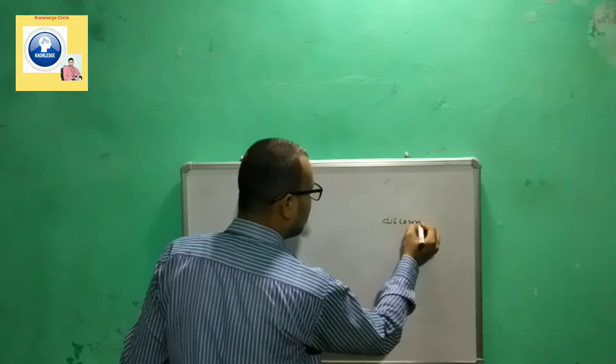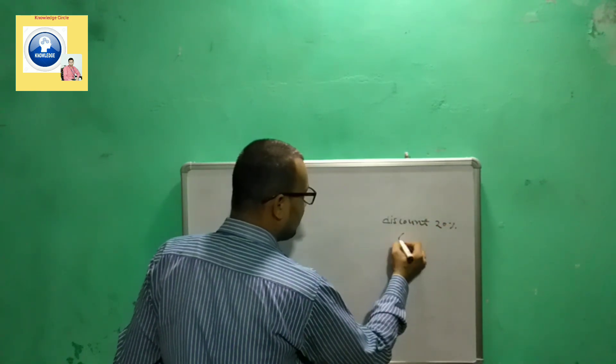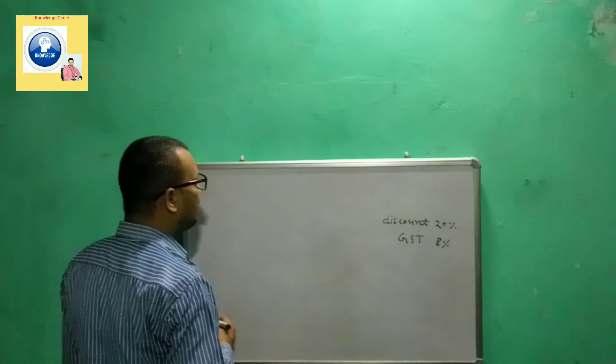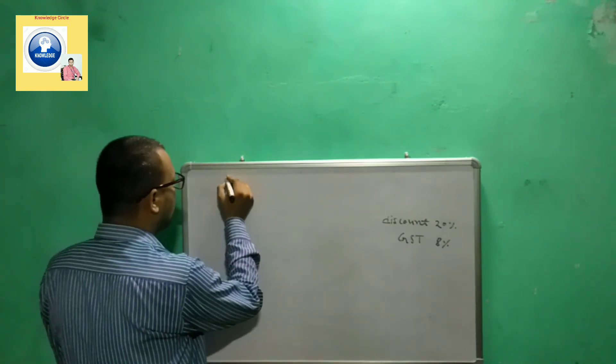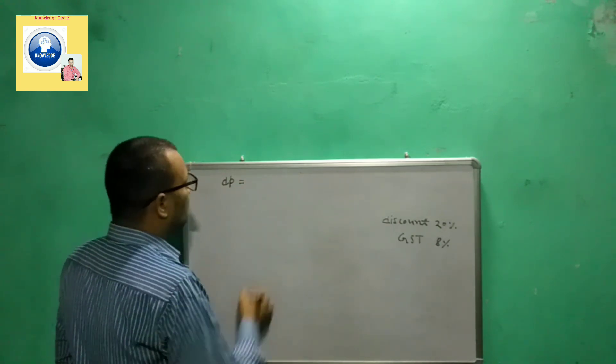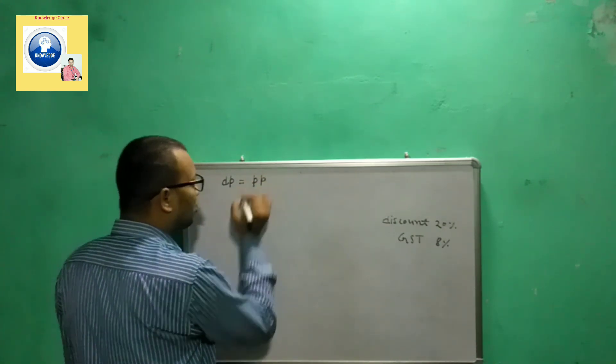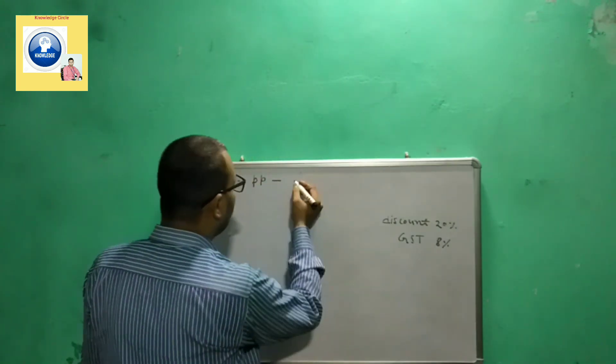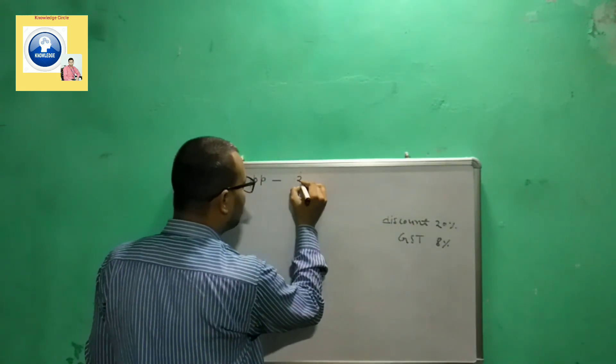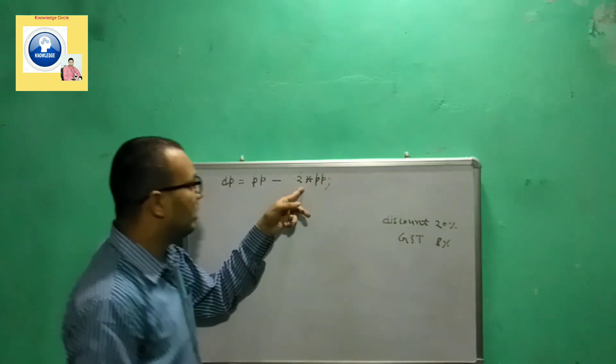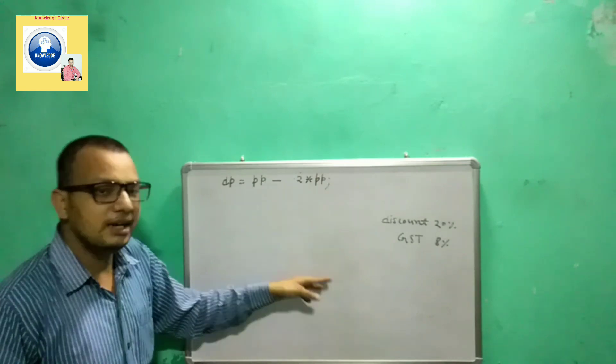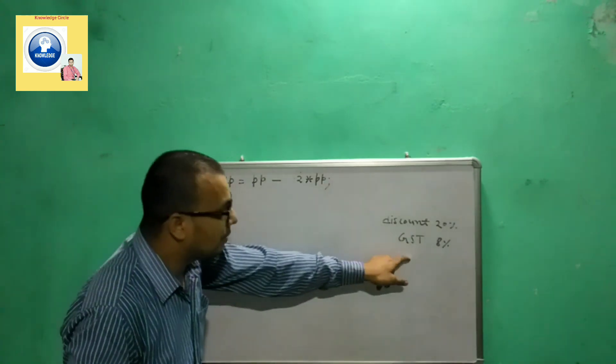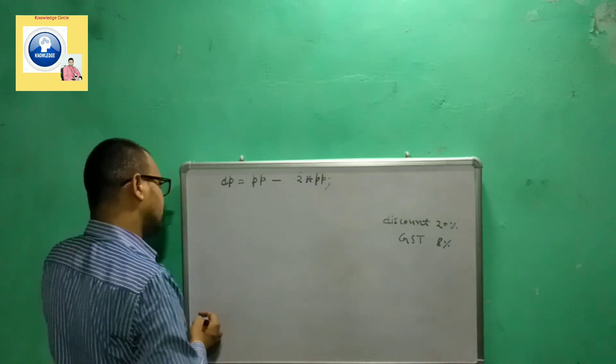Let's calculate the discount price: DP equals PP minus 0.2 into PP. 20 percent of PP will be subtracted from PP and that will be discount price. After deduction we will get the discount price. Now we have to apply 8 percent GST on the discounted price.